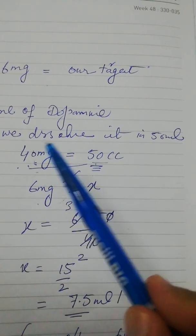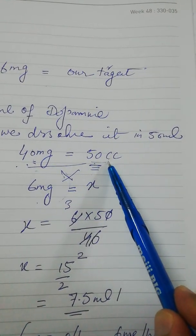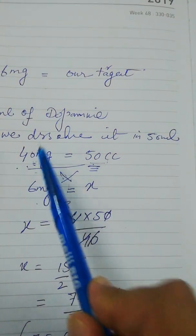We have to find out that if the solution of 50 cc contains 40 mg, how much of that solution will contain 6 mg.